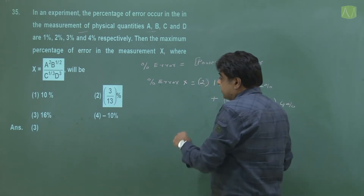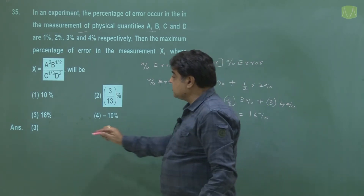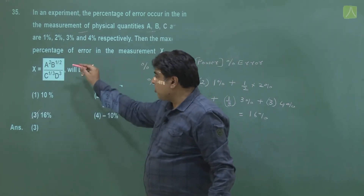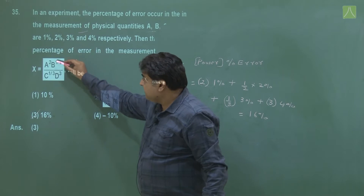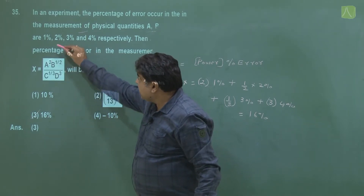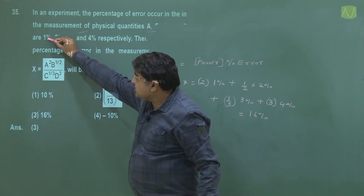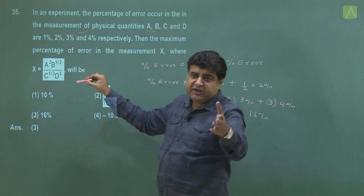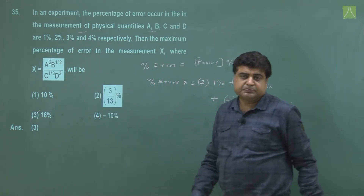Adding these: 2×1% + ½×2% + ⅓×3% + 3×4% = 2 + 1 + 1 + 12 = 16% total. So our right answer is the 3rd option. The key rule is: power multiplied by the percentage error; add all contributions from a, b, c, d to get the answer.